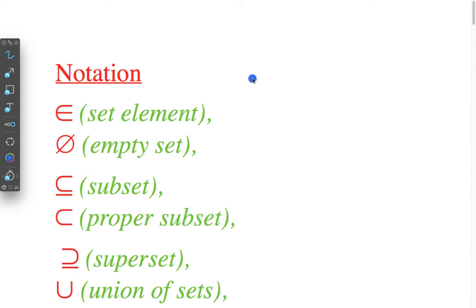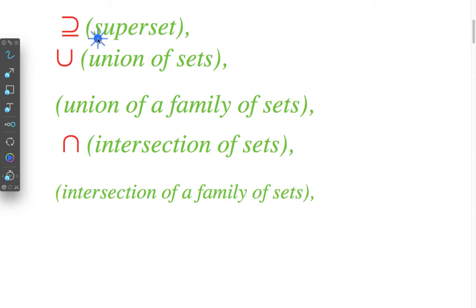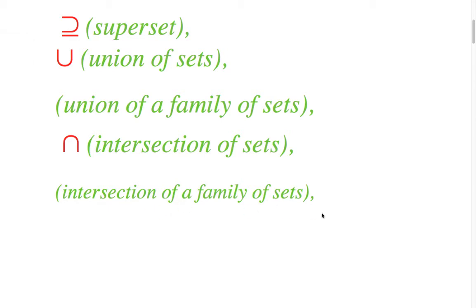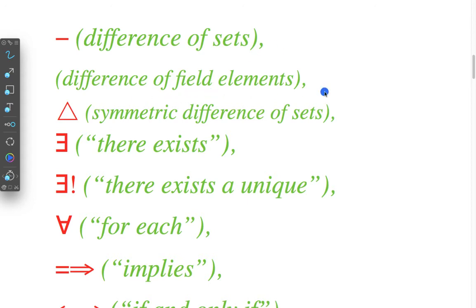Here is the notation of mathematical symbols. Given this set: element, impetus set, subset, proper subset, superset, union of set, intersection of set, difference of sets, difference of field element, symmetric difference of set.